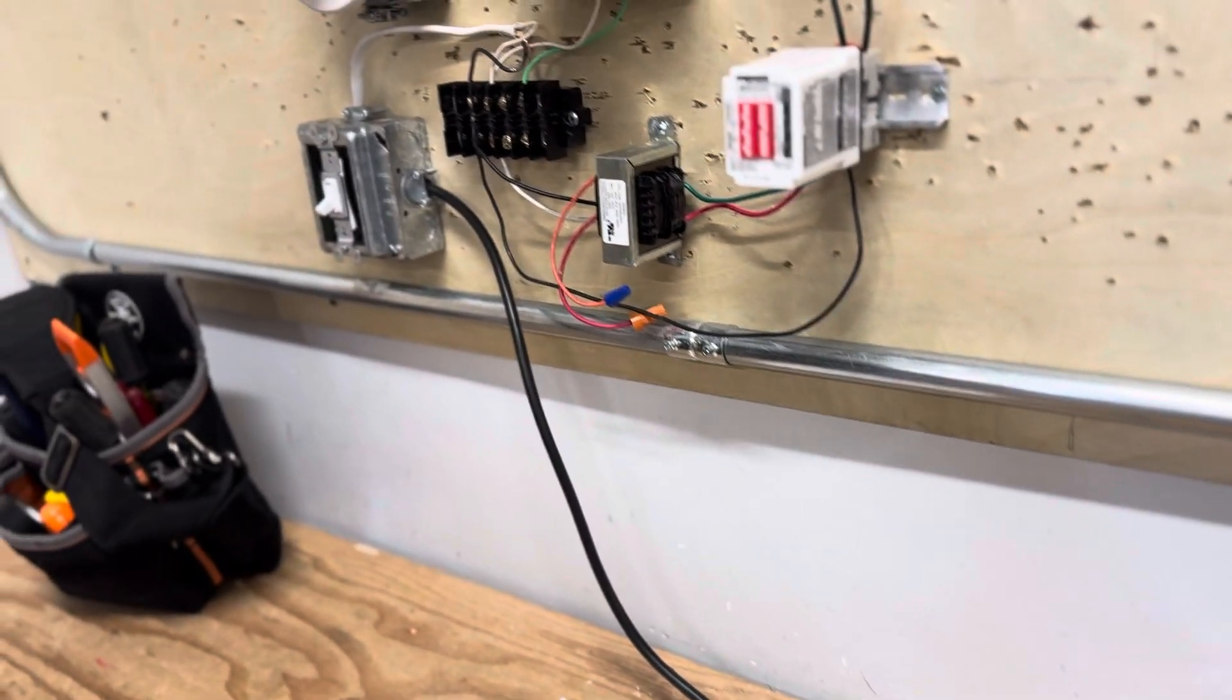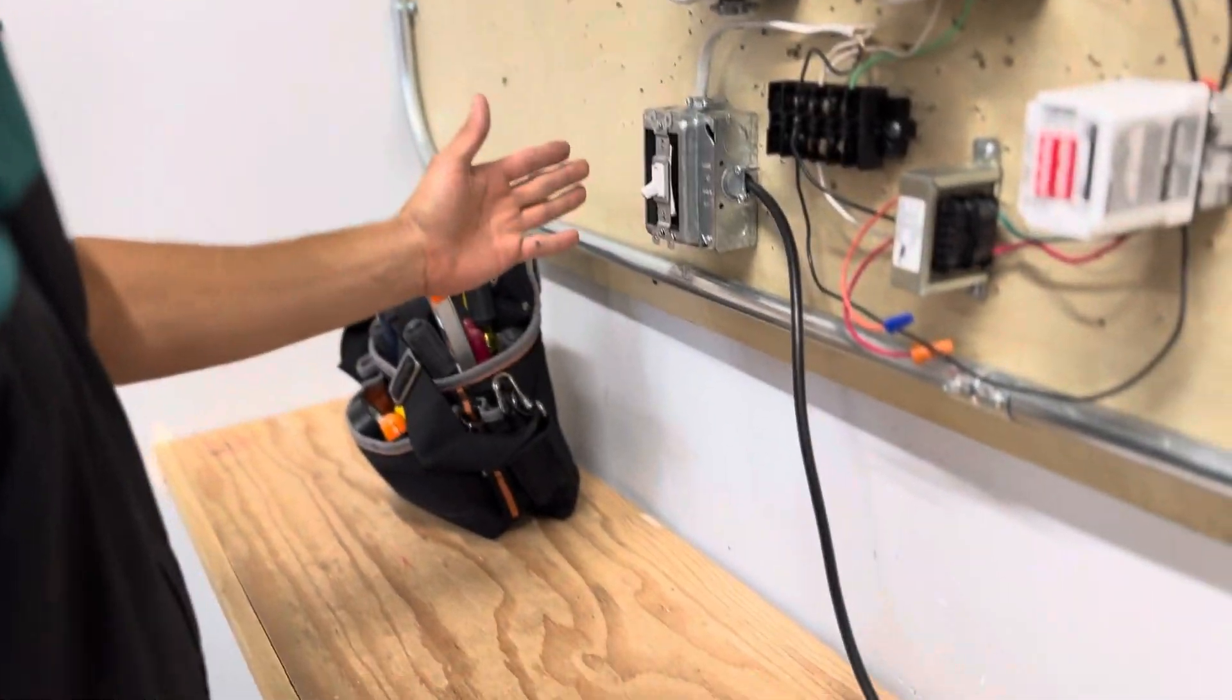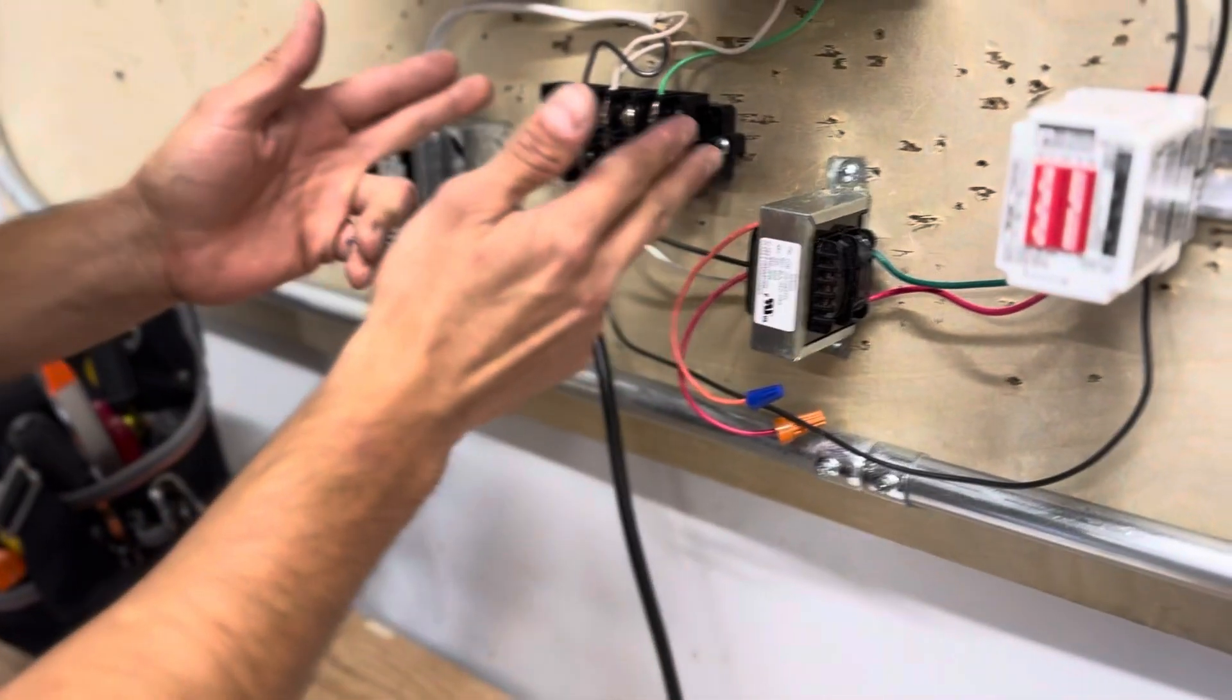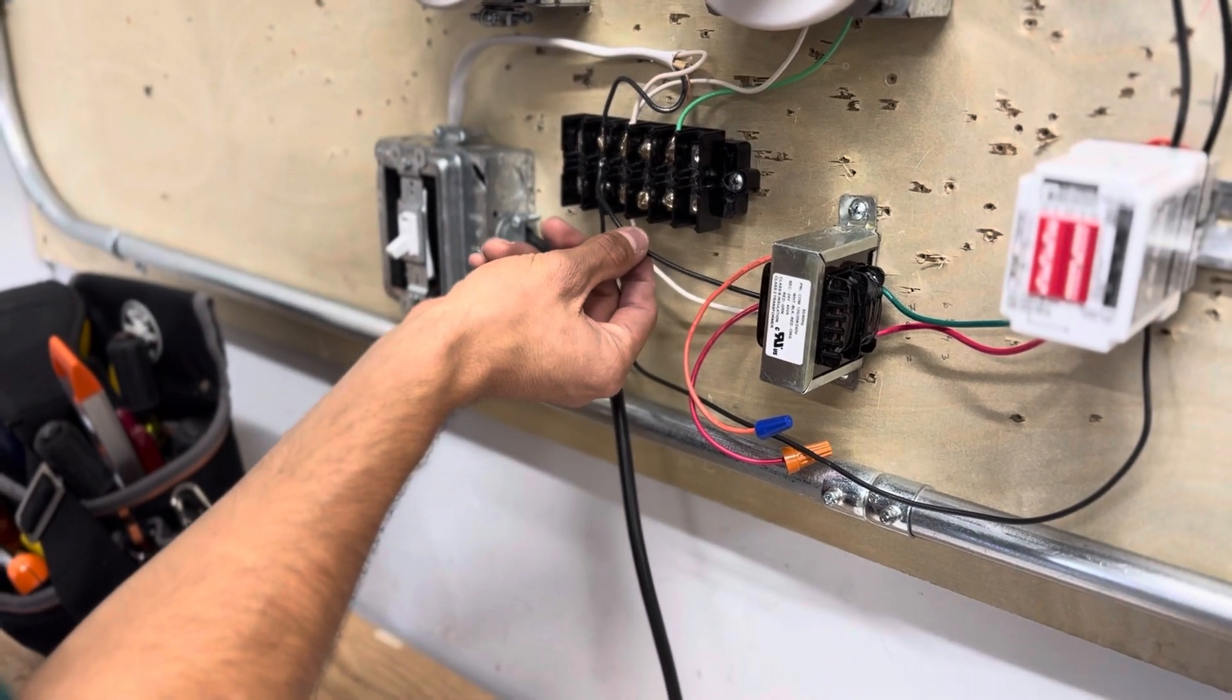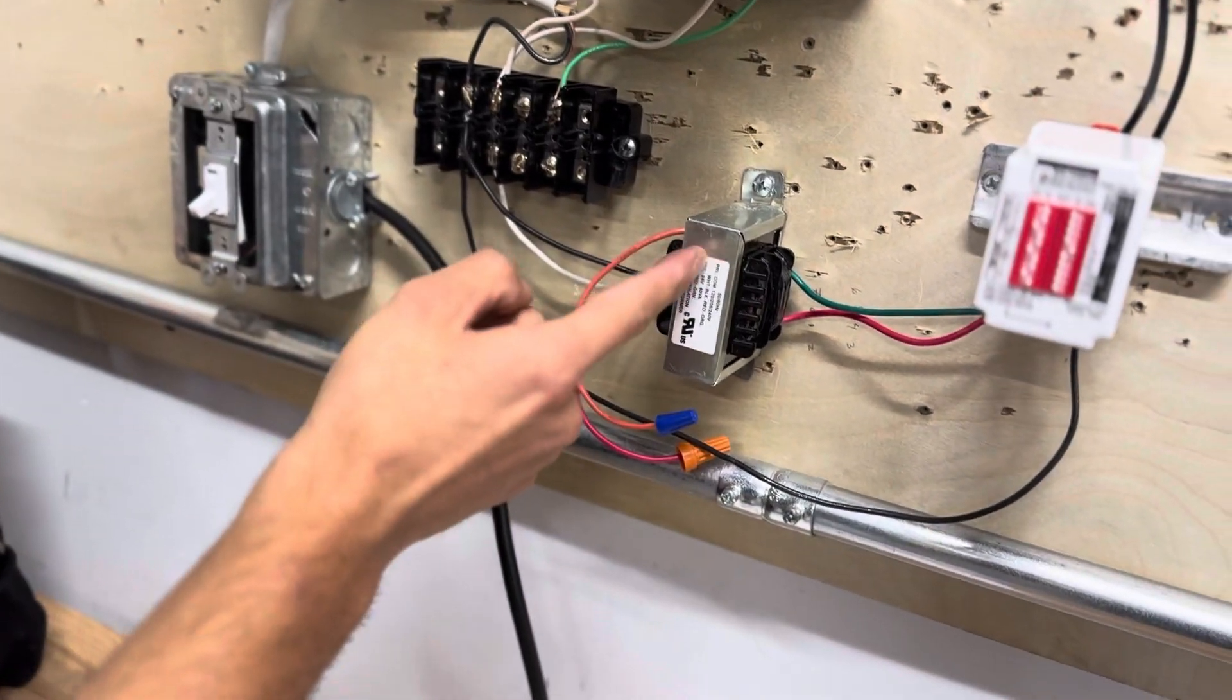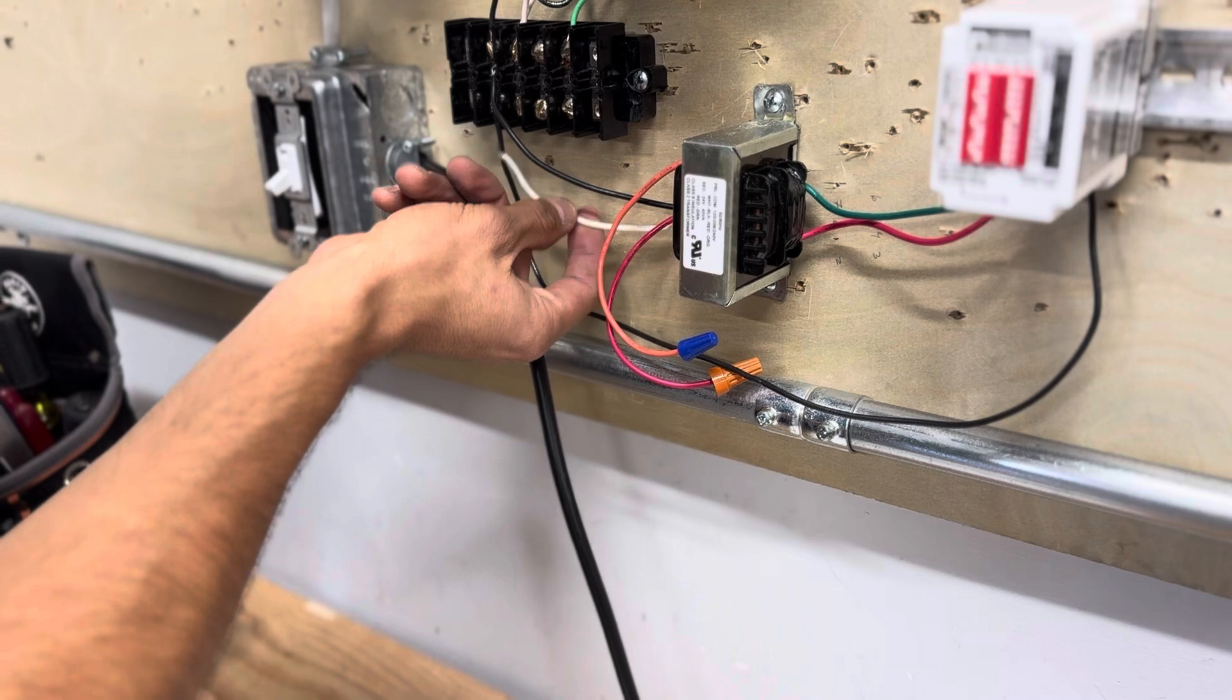So now let's do a general overview of our setup here. So we have a single pole switch that is feeding into a terminal block. Now that 120 volt source coming from here is what powers this transformer. Your neutral is your line two of your transformer here.